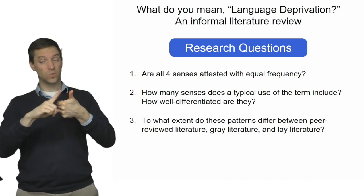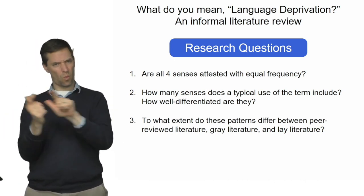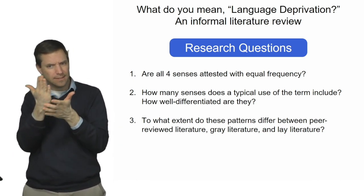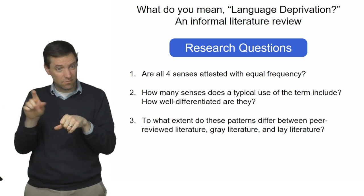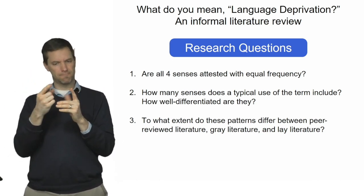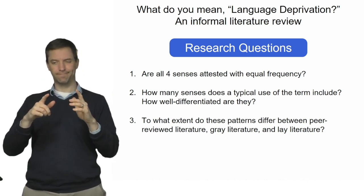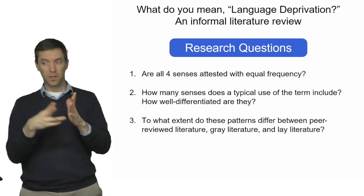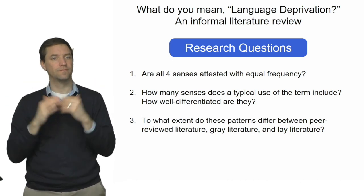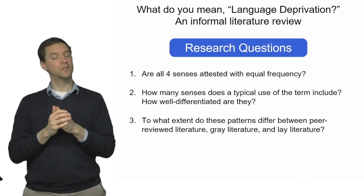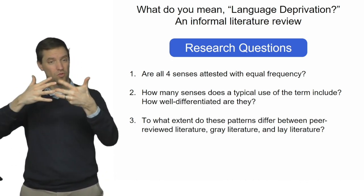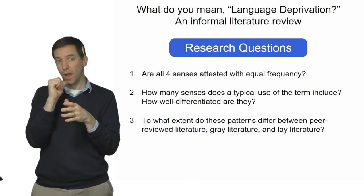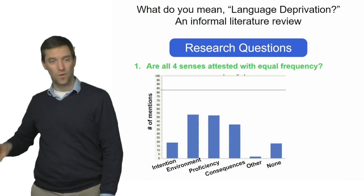Here are our research questions. First, do people actually use all four senses we've laid out, and are they all equally common or are some more common than others? Question two: in any given article and given use of the term, does it tend to mean exactly one thing, or does it incorporate multiple meanings? And question three: across our three types of literature — peer-reviewed, gray literature, or lay literature — do we see the same kinds of patterns?